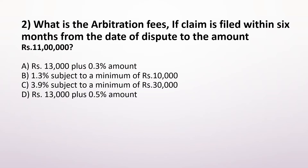Next question. What is the arbitration fees if a claim is filed within 6 months from the date of dispute to the amount of Rs. 11 lakh? Option A. 13,000 plus 0.3%, Option B. 1.3% subject to a minimum of 10,000, Option C. 3.9% subject to a minimum of 30,000, Option D. 13,000 plus 0.5%. The correct answer is Option A. 13,000 plus 0.3%.